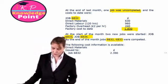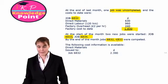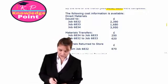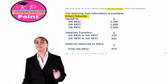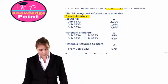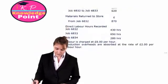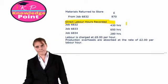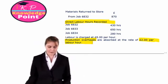By the end of the month, jobs 6832 and 6833 were completed, which means 6834 was incomplete by the end of the month. We then have the costs associated with each job for the current month: the direct material cost for each of the three jobs, some material transfers moving materials from one job to another, materials returned to store, direct labour hours recorded for each of the three jobs, and production overheads absorbed at a rate of £2 per labour hour.